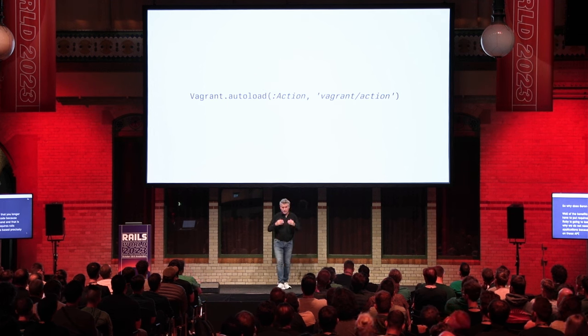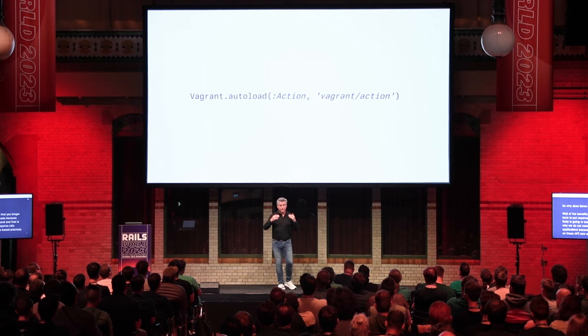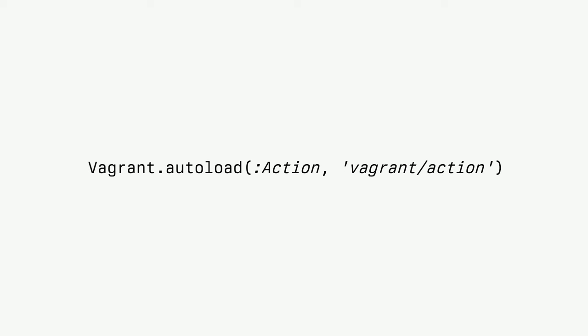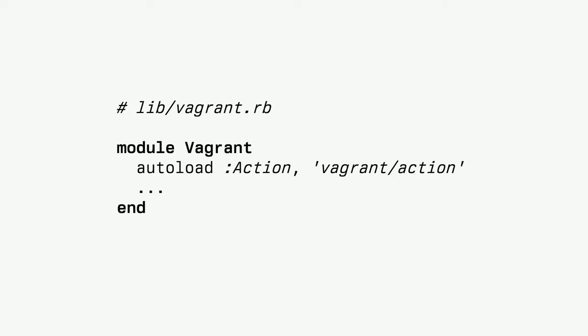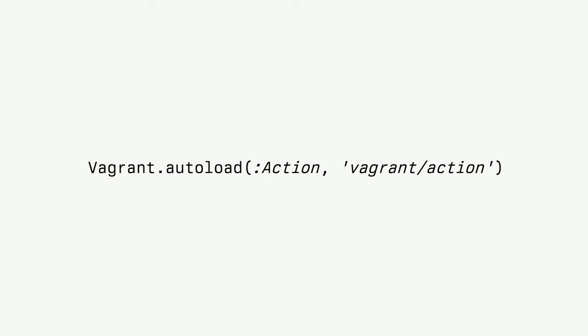Let's look at the same thing from a different perspective. autoload is a method receiving two arguments: the name of the constant and a string to be required. It is invoked on self — which, in the body of a module, is the module itself. This explicit form is doing exactly the same thing.